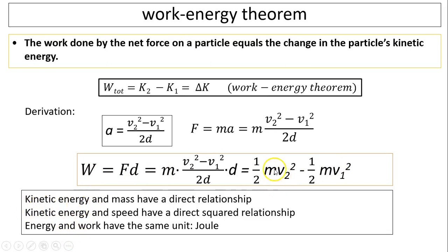So kinetic energy, this is the expression for kinetic energy. Kinetic energy is the energy due to motion. Kinetic energy and the mass have a direct relationship. If you double the mass, you double the kinetic energy. Kinetic energy and speed have a direct squared relationship. If you double the speed, you quadruple the kinetic energy.